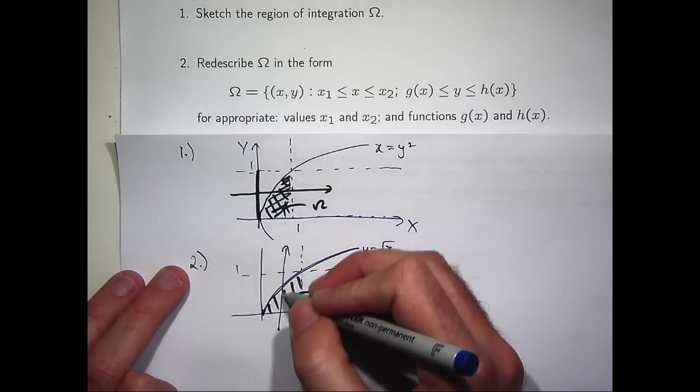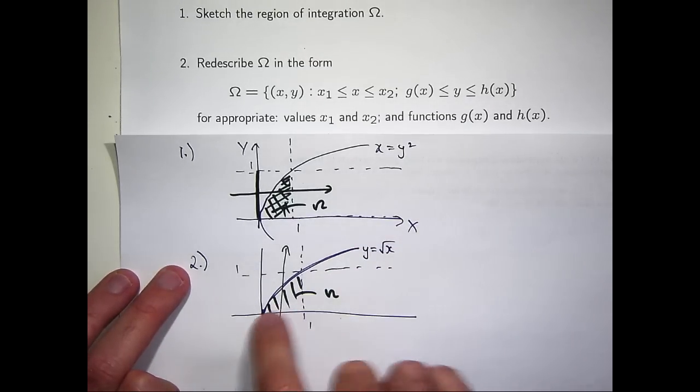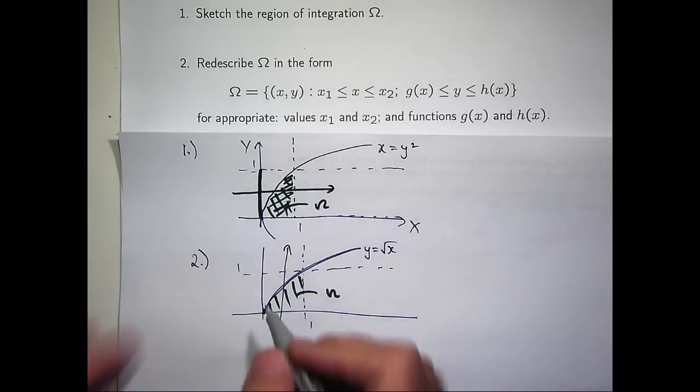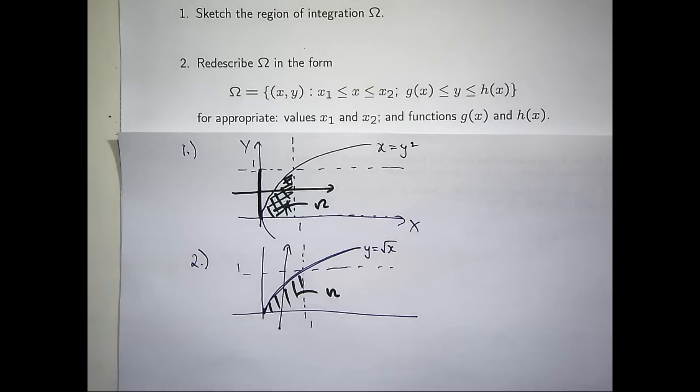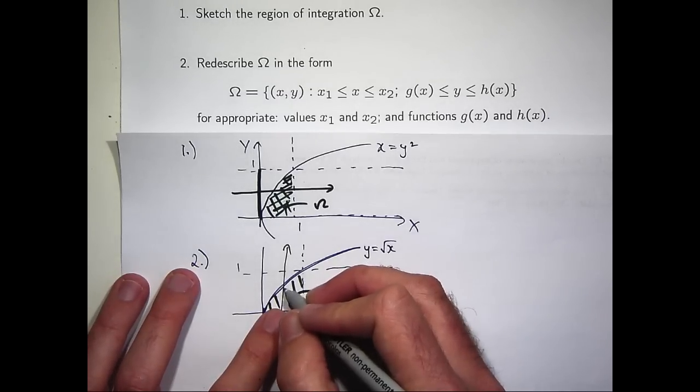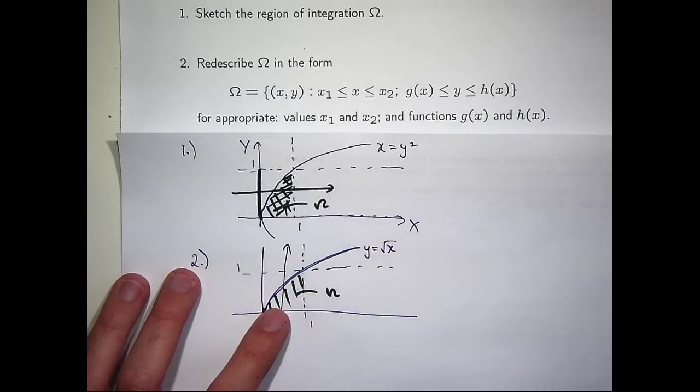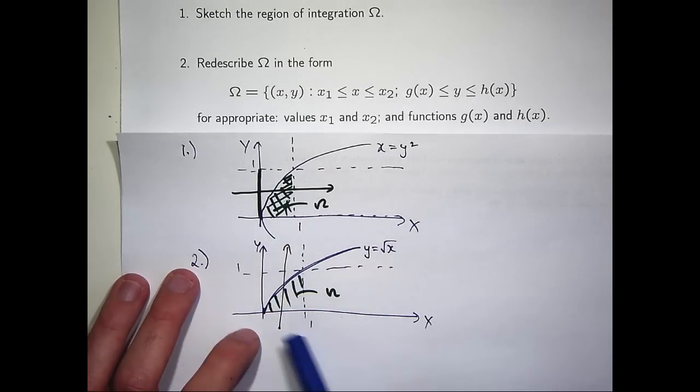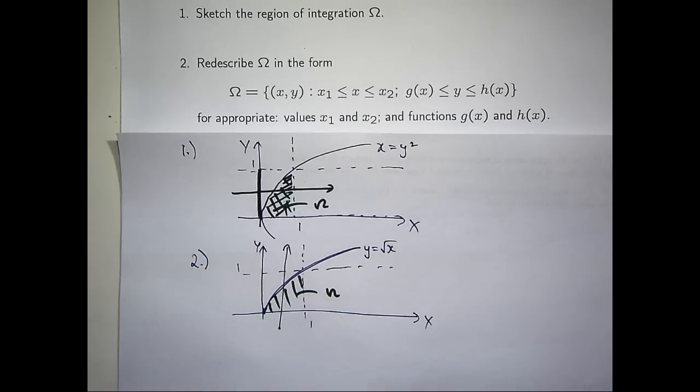So where does this enter the region omega? It enters the region omega at the line y equals 0, and it moves on up and leaves omega at the line y equals root x. So that's part of my description.